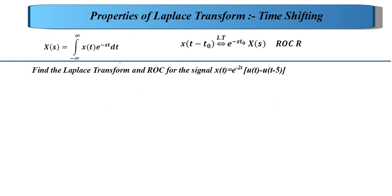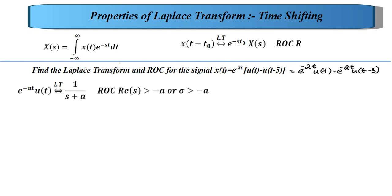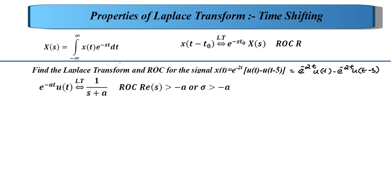The next signal is given as a combination of two signals, so we need to apply the linearity property as well. We rewrite it as e^(-2t)u(t) minus e^(-2t)u(t - 5). Using the standard causal signal formula, the Laplace transform of e^(-2t)u(t) is 1/(s + 2) with ROC σ > -2.